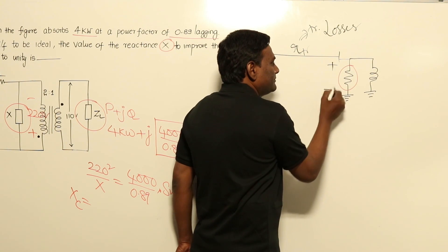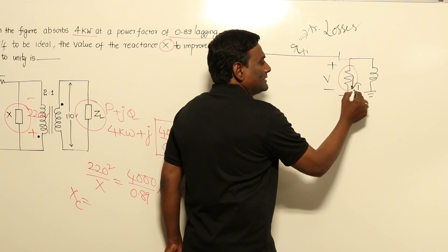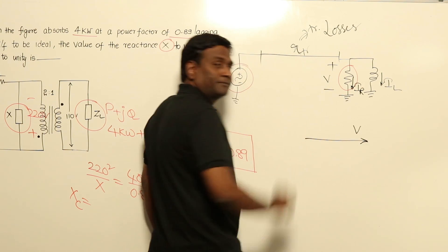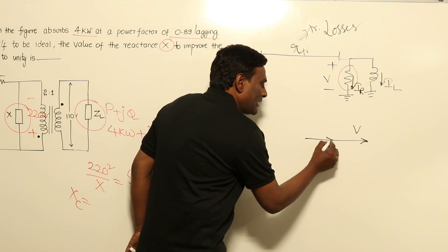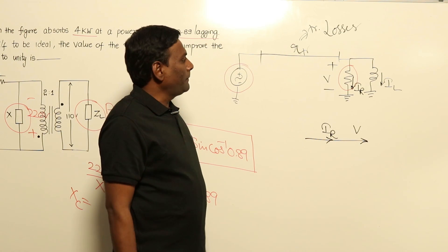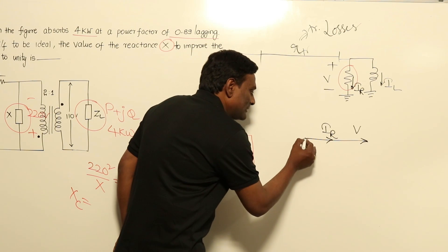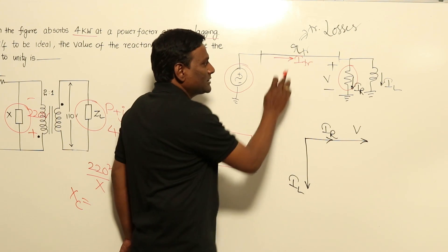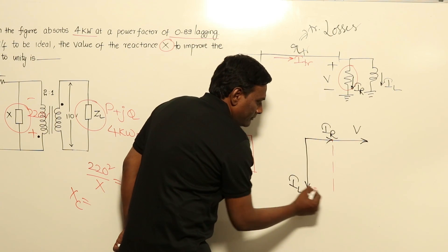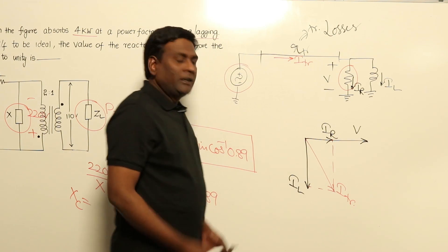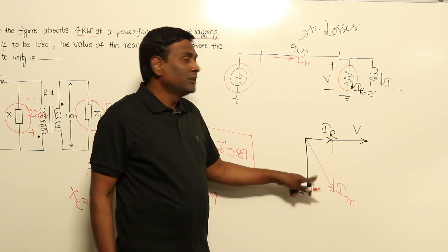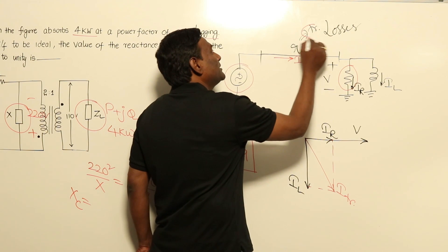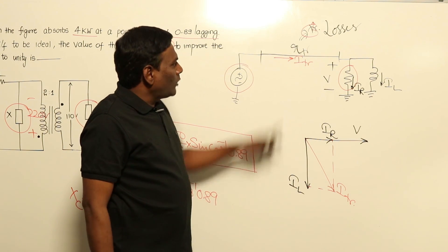In the phasor diagram, let this be V. The current through the resistance is Ir — in phase with voltage. The current through the inductance is IL — lagging voltage by 90 degrees. The transmission line current is Ir + IL. The magnitude (length) of the total current is increased compared to Ir alone. So because of the inductance, transmission line losses are getting increased.